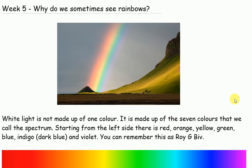Week 5: Why do we sometimes see rainbows? White light is not made up of one colour. It is made up of the seven colours that we call the spectrum.